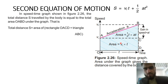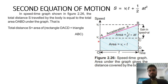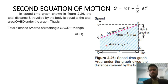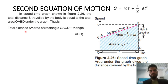To calculate this area, we divide it into two parts: a rectangular shape and a triangular shape. If we calculate the area of the rectangle and add it to the area of the triangle, it will give us the total distance covered by the body. So: Total distance = Area of Rectangle + Area of Triangle.